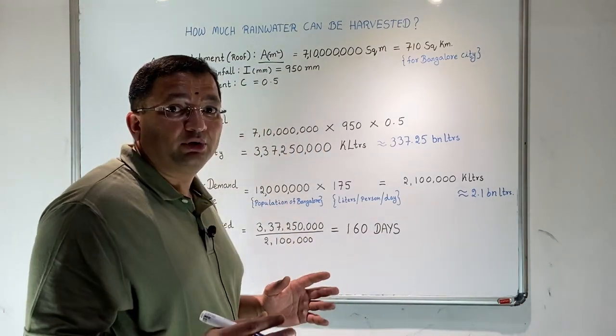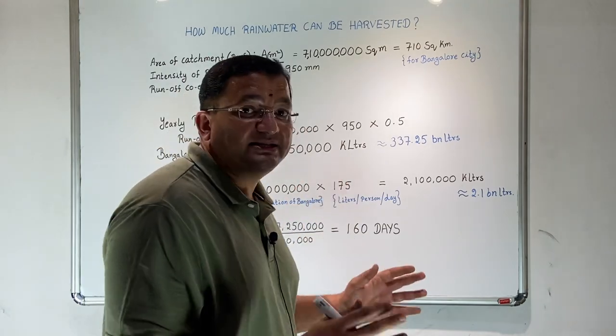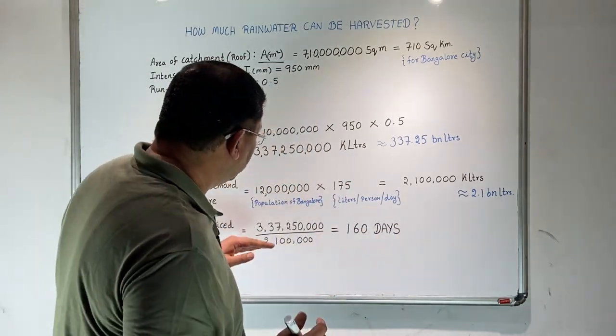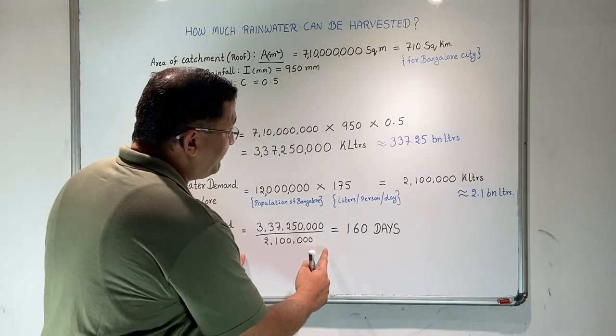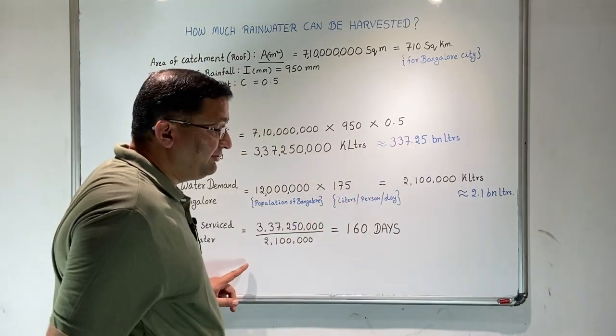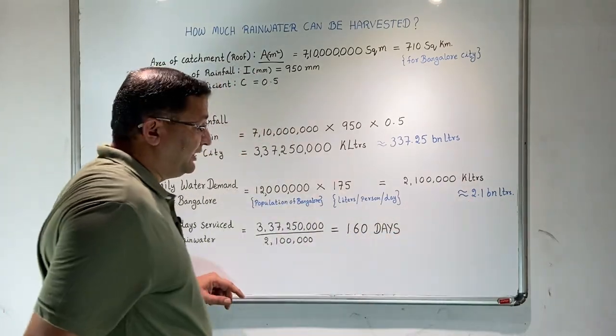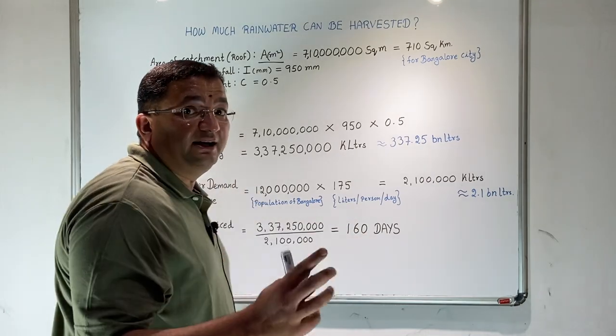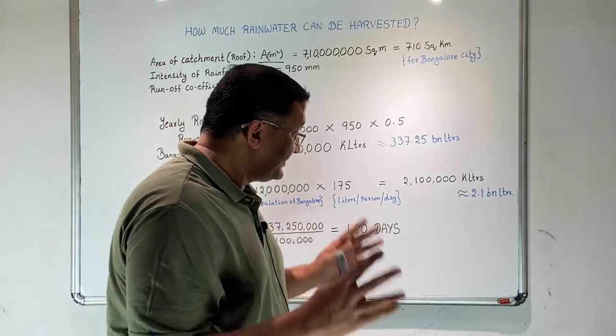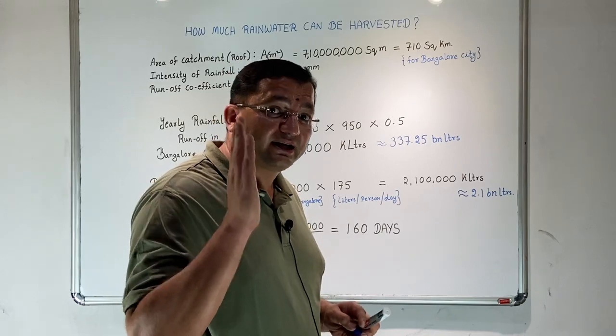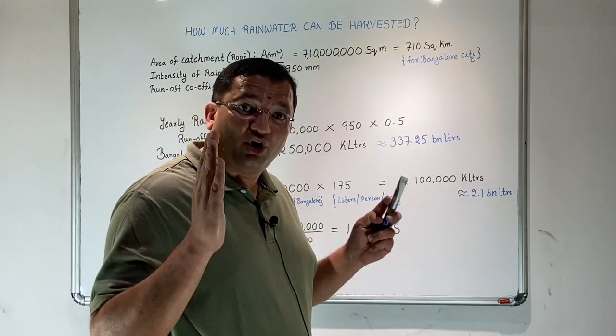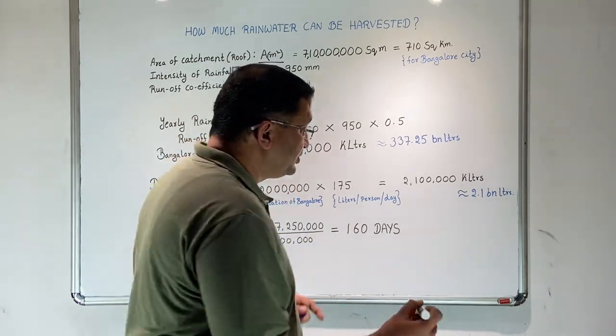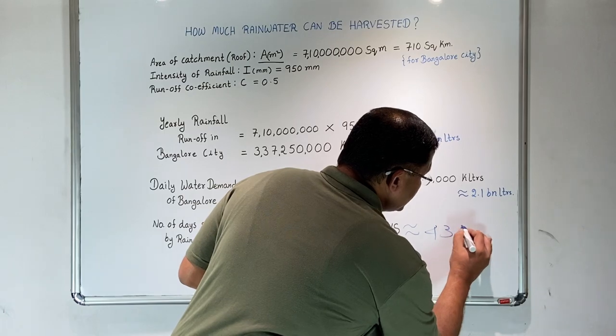We will compute how many days in a year we can thrive only by rainwater. The number of days serviced is the yearly runoff divided by daily demand. This gives us 160 days. That is, 160 days in a year, Bangalore can thrive only by rainwater falling on the city without relying on any external source. This is roughly 43 percent.